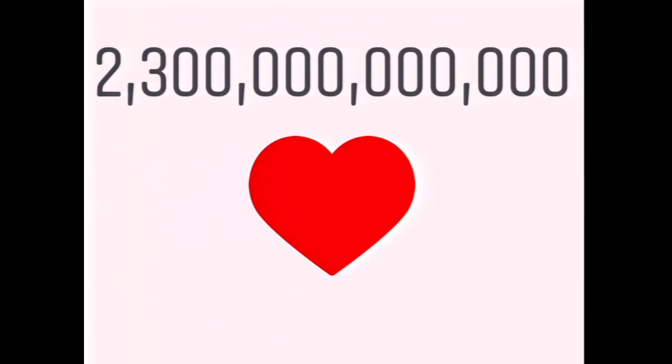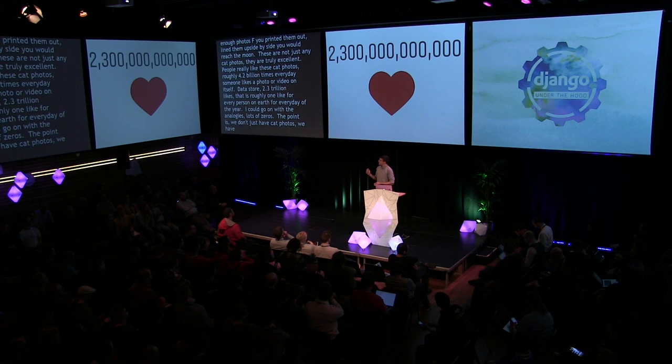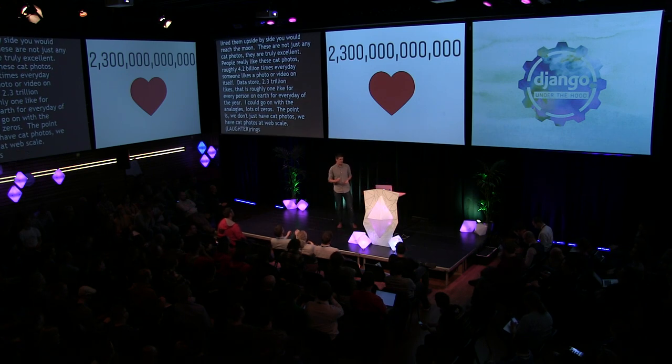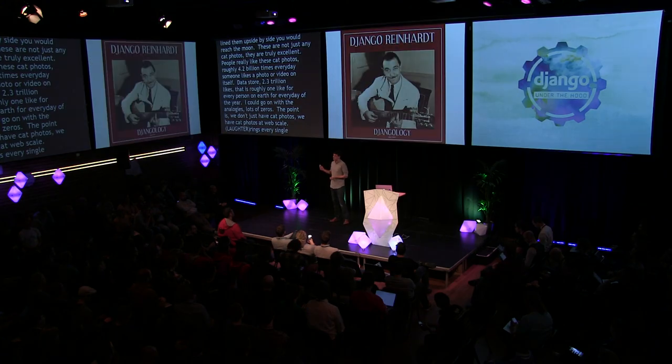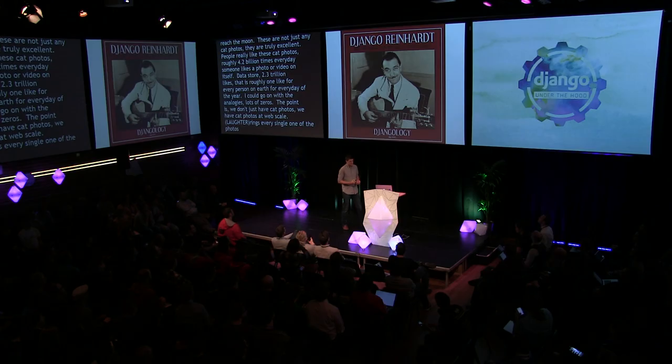That's roughly one like for every person on earth for every day of the year. The point is, we don't just have cat photos — we have cat photos at web scale. Every single one of those 95 million photos and videos and 4.2 billion likes every day goes through this guy.